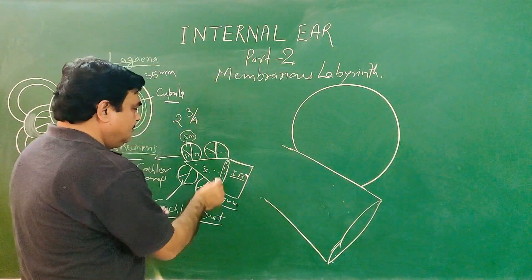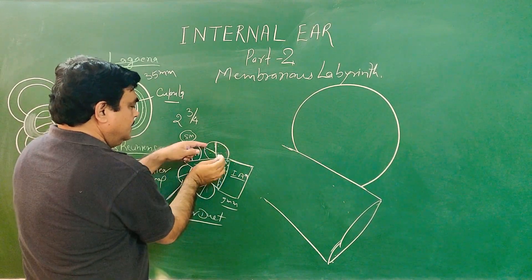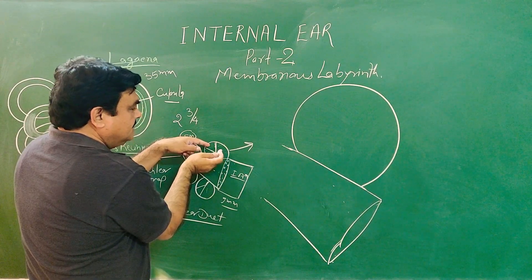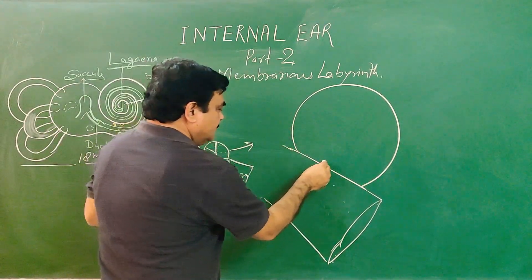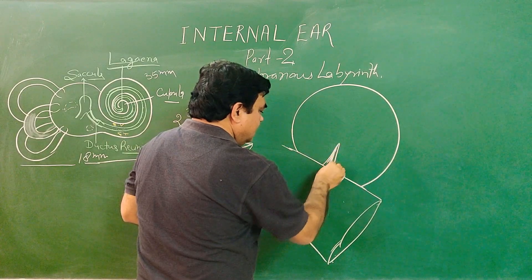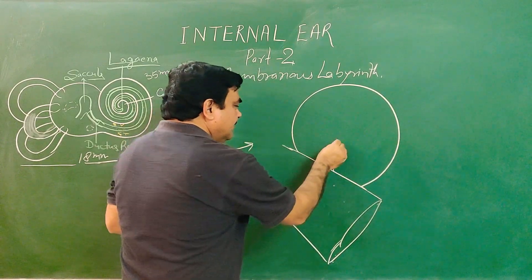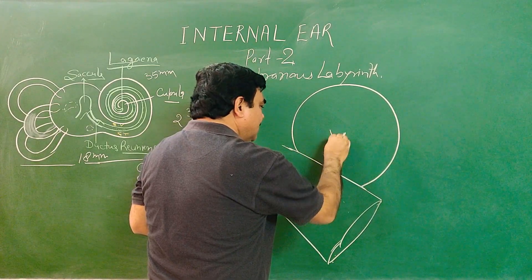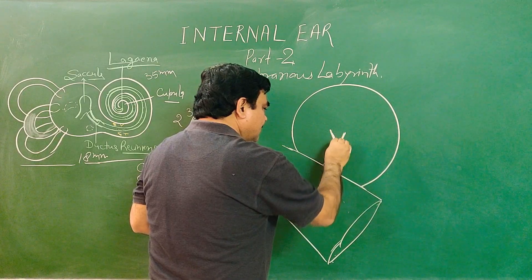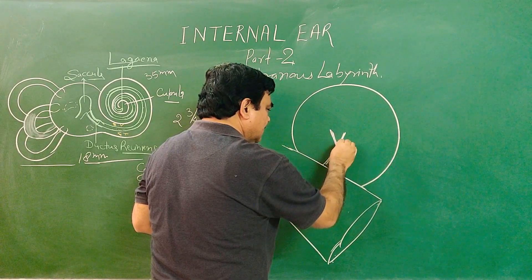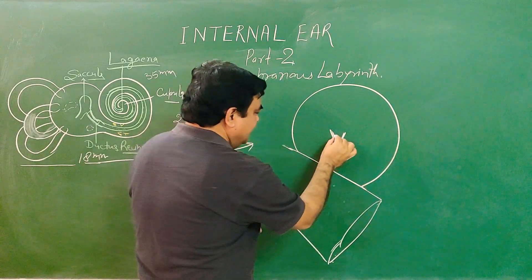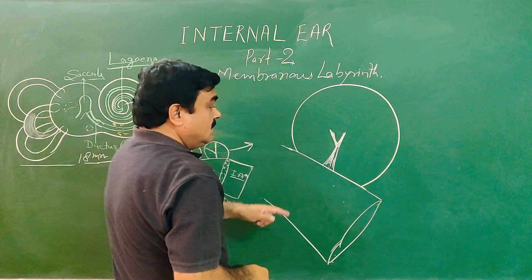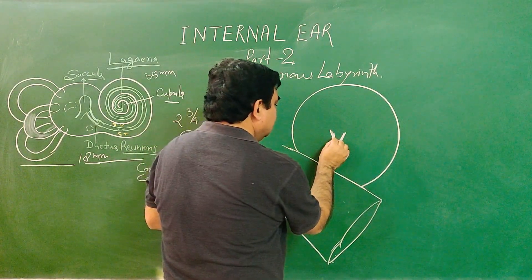This is the modiolus. This part is enlarged — a magnified part. Here is the position. The spiral lamina divides into two lips: one lip is here and one lip is here. By a C-shaped sulcus, the spiral lamina is divided into these two lips.